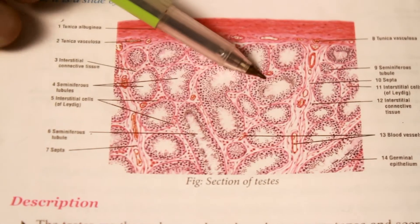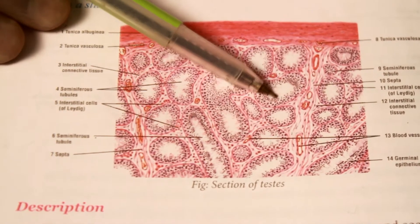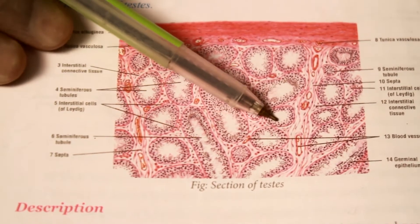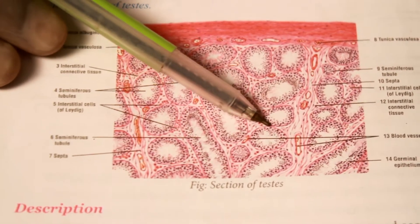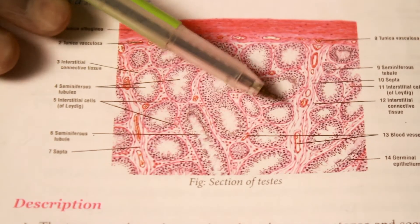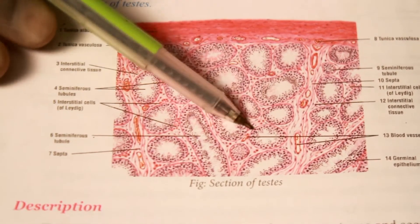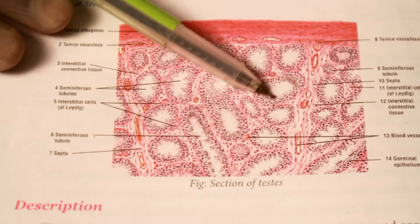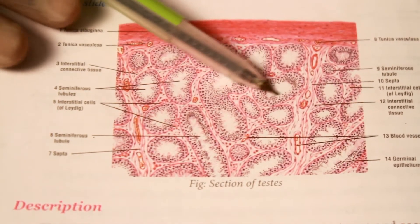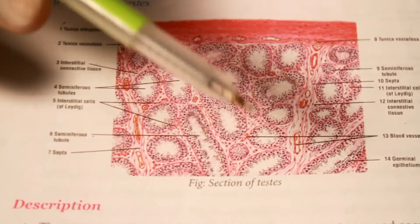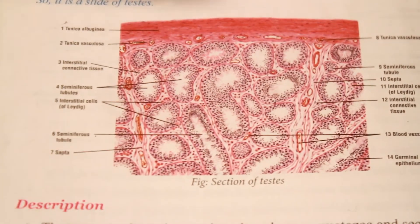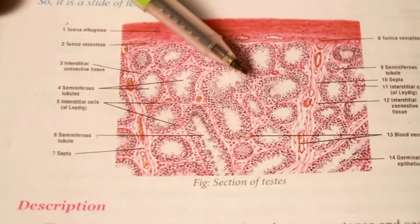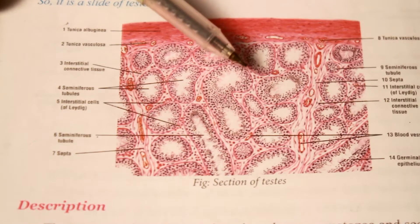The blood-testis barrier is important for mature spermatozoa. As spermatozoa starts to be produced in adult males from adulthood, it does not appear from birth. So spermatozoa is detected as an antigen by blood. This blood-testis barrier separates the spermatozoa from blood. But if this blood-testis barrier is dissolved, then azoospermia or infertility in males develops due to autoimmune antibody formation.